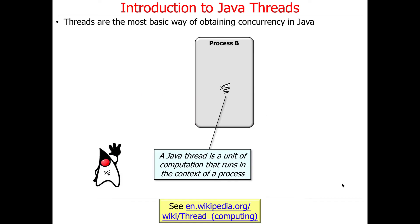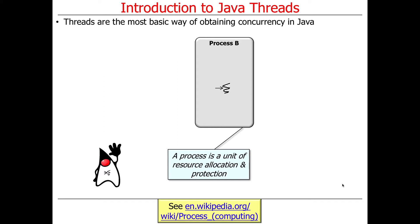Threads are the most basic way of obtaining concurrency in Java, if you think about what has to happen under the hood to get things to run. Some programming abstractions that Java provides — things like parallel streams, things like completable futures — actually don't require you to use threads directly; they're hidden from you. But we're going to focus on how to program with threads. A thread is basically a unit of computation that runs in the context of a process. A process is a unit of resource allocation and protection, meaning it allocates certain resources.